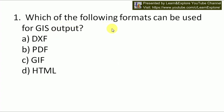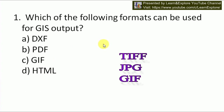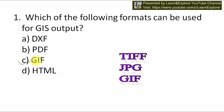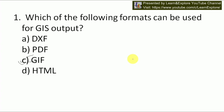Our first question is: which of the following formats can be used in GIS output? Options are DXF, PDF, GIF, and HDML. In GIS output, TIF format, JPG format, and GIF formats are used. So our answer will be C — GIF. GIS output uses GIF format, and we also use TIF and JPG format.